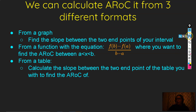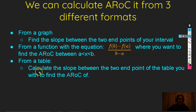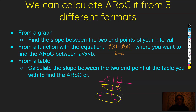From a function, we use f(b) minus f(a) over b minus a, where we find the average rate of change between interval a and interval b — this is essentially just the slope formula. From a table, we calculate the slope between the two endpoints as well. For example, if I have an x-y table and I wanted to find the average rate of change between x equals 2 and x equals 10, I just do the outputs: 2 minus 7 over 10 minus 2.